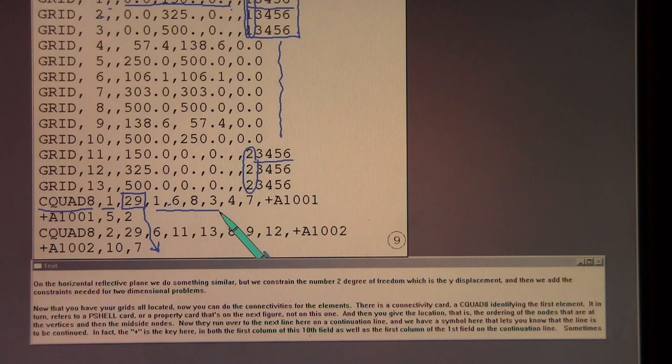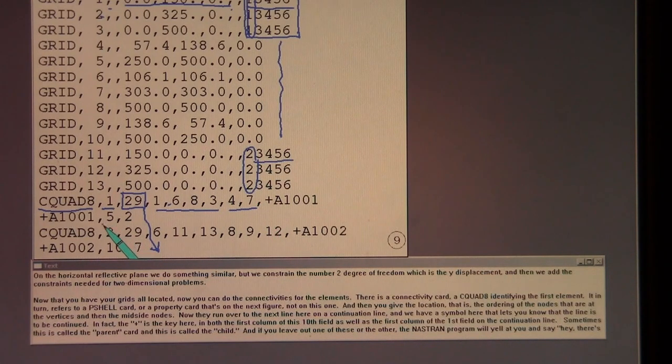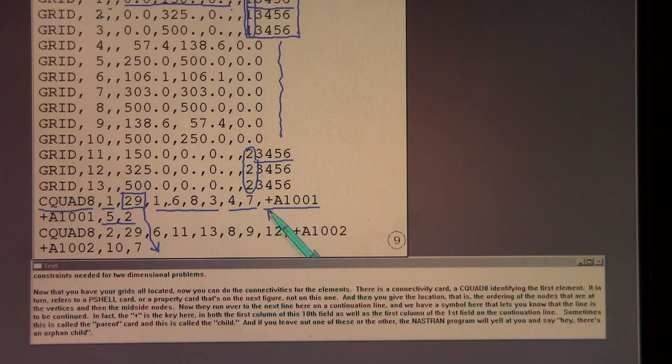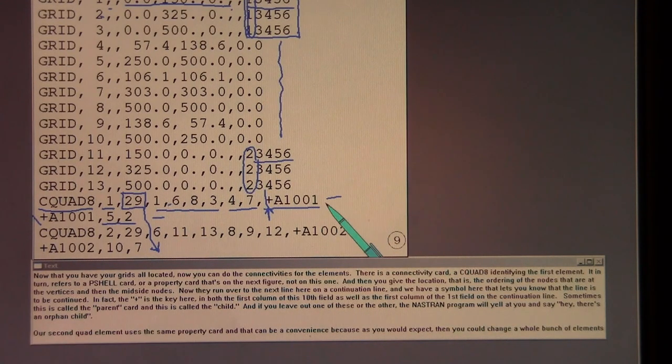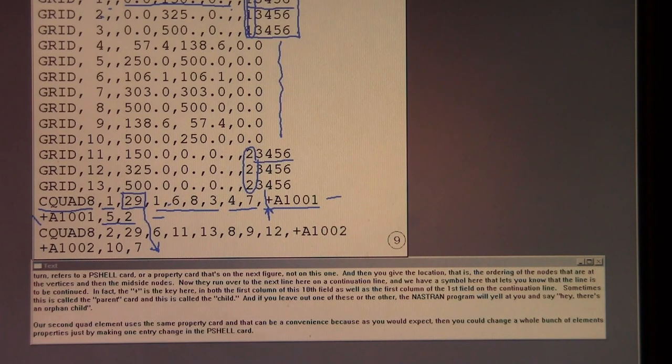Now they run over to the next line here on a continuation line, and we have a symbol here that lets you know that the line is to be continued. In fact, the plus is the key here in both the first column of this tenth field as well as the first column of the first field on the continuation line. Sometimes this is called the parent card or image, and this is called the child. And if you leave out one of these or the other, the Nastran program will yell at you and say, Hey, there's an orphan child.